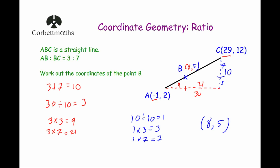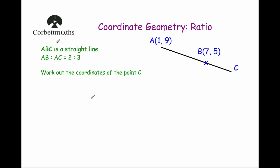Let's look at our second example. Line ABC is a straight line and the ratio of AB to AC is 2 to 3. So from A to B is two parts and A to C the whole way is three parts. We've been asked to work out the coordinates of point C. There are two ways to do this and we'll look at both techniques. First, let's consider the x-coordinates of A and B.